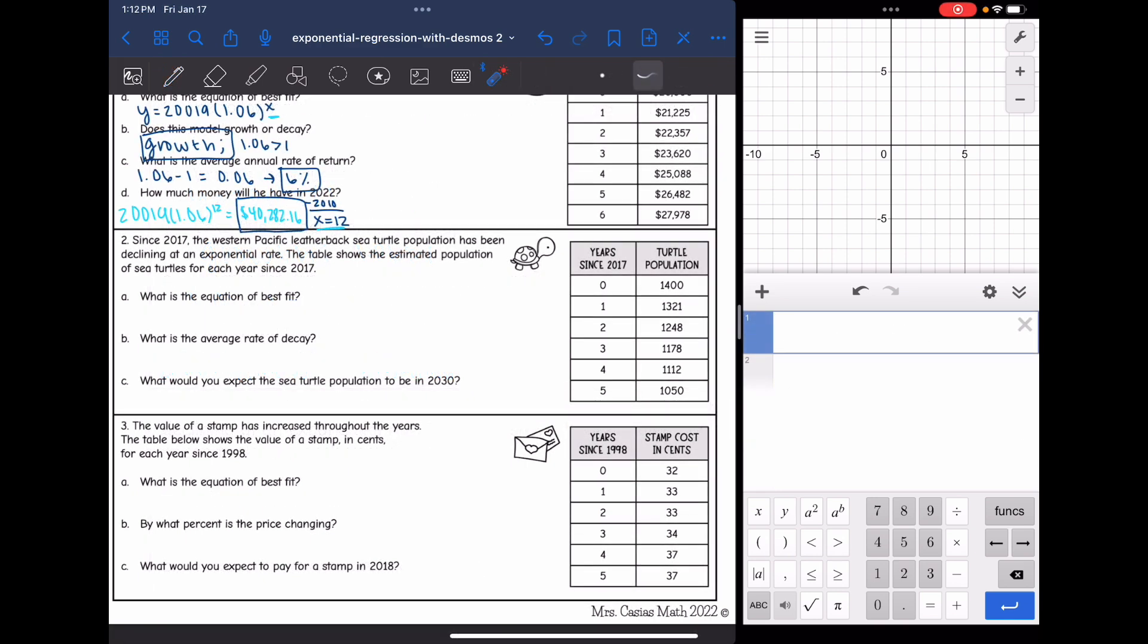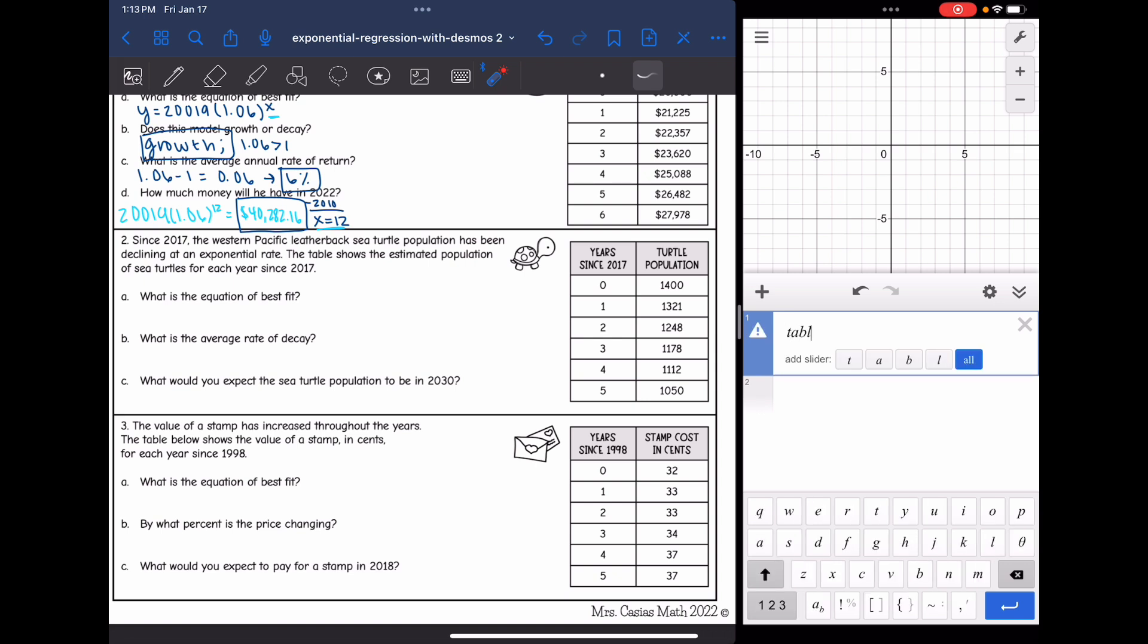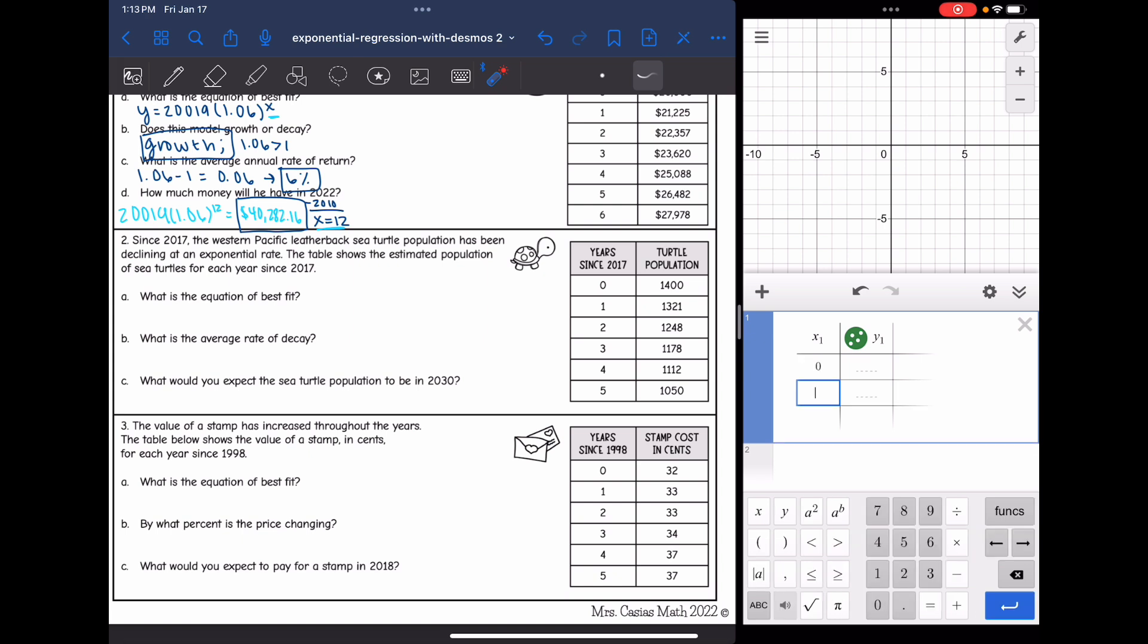It says, since 2017, the Western Pacific leatherback sea turtle population has been declining at an exponential rate. The table shows the estimated population of sea turtles for each year since 2017. And the first thing it's asking us for is the equation of best fit. So I'm going to go to Desmos and type table so I'm able to input this data into Desmos. And I'm going to start inputting the data.